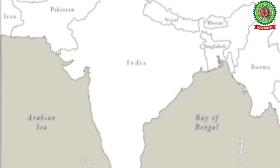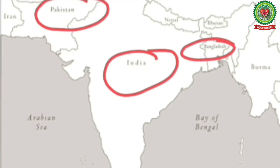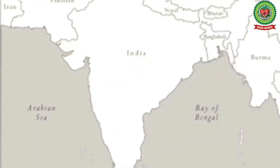The monsoon winds blow over India, Pakistan, Bangladesh, Myanmar, Sri Lanka, and even parts of Southeast Asia, North Australia, China, and Japan. Several theories have been evolved about the origin of monsoon. Let us discuss a few theories now.